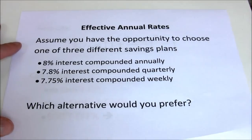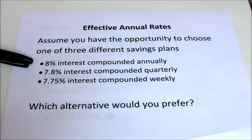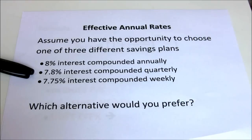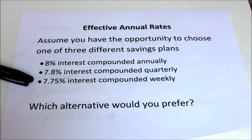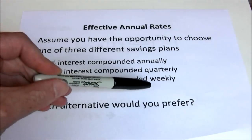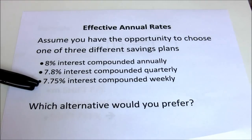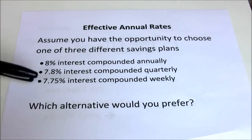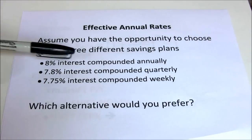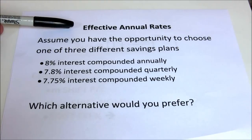The reason effective annual rates are important is that sometimes our investment opportunities offer different compounding periods per year. For example, here we have 8% interest compounded annually, 7.8% interest compounded quarterly, or 7.75% interest compounded weekly. In choosing which investment we'd prefer, we have a trade-off. It's better to compound money more frequently, so weekly is better than quarterly or annual. However, higher interest rates are also better. This is the classic apples-to-oranges comparison, and what we want is an apples-to-apples comparison. The tool for that is the effective annual rate.